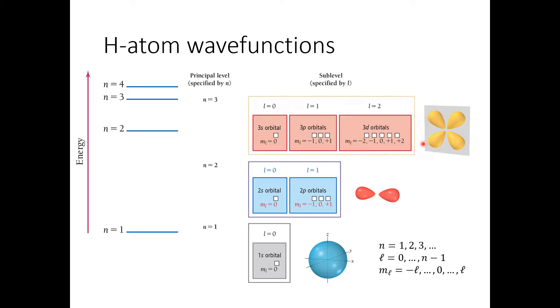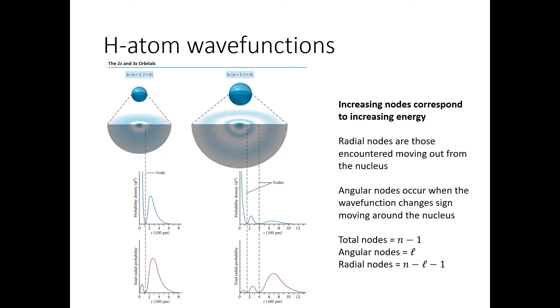When we get up to the n equals 3 level, we can have additional angular momentum and magnetic quantum numbers. And again, we're going to have the s and the p orbitals. But now we have a new set, which are d orbitals.